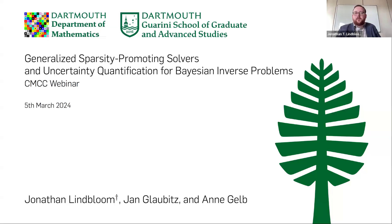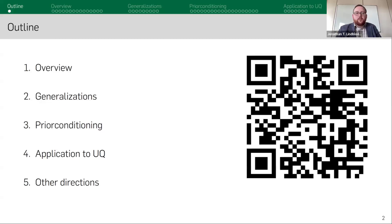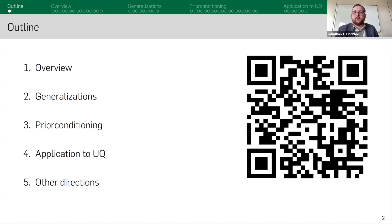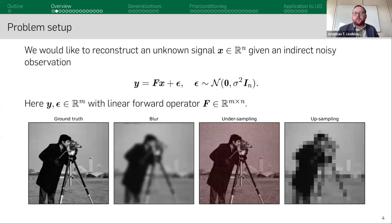Happy to be here today, thanks for the invitation. I'm going to be talking about generalized sparsity promoting solvers and uncertainty quantification for Bayesian inverse problems. Here's an outline: I'll give an overview of the types of methods I work on, then present some generalizations to pre-existing algorithms and methodologies. There's a QR code here if you're interested in our latest preprint. Then I'll move on to prior conditioning — a specialized preconditioning strategy for accelerating the computational algorithms — and then talk about how we can apply these ideas to performing uncertainty quantification for these types of models.